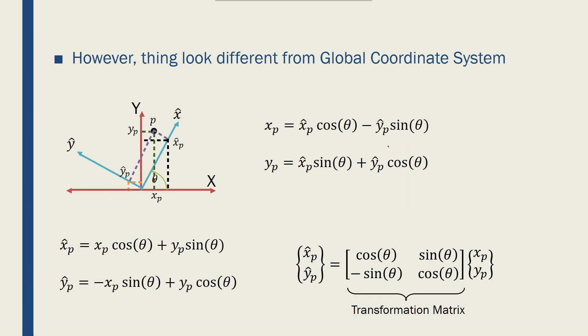In order to understand transformation matrix, let's start with this example. Let's say we have two coordinate systems, the global one, which I have written or drawn with red, and the local one, which I have drawn with blue. The local ones have the hats on top of them.